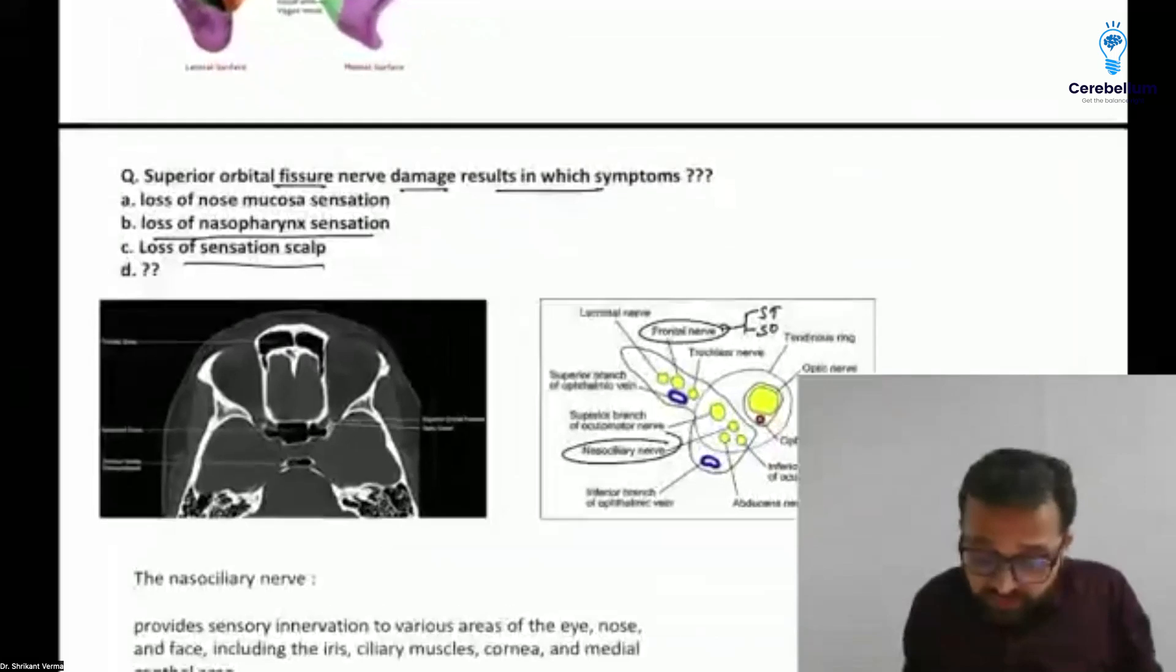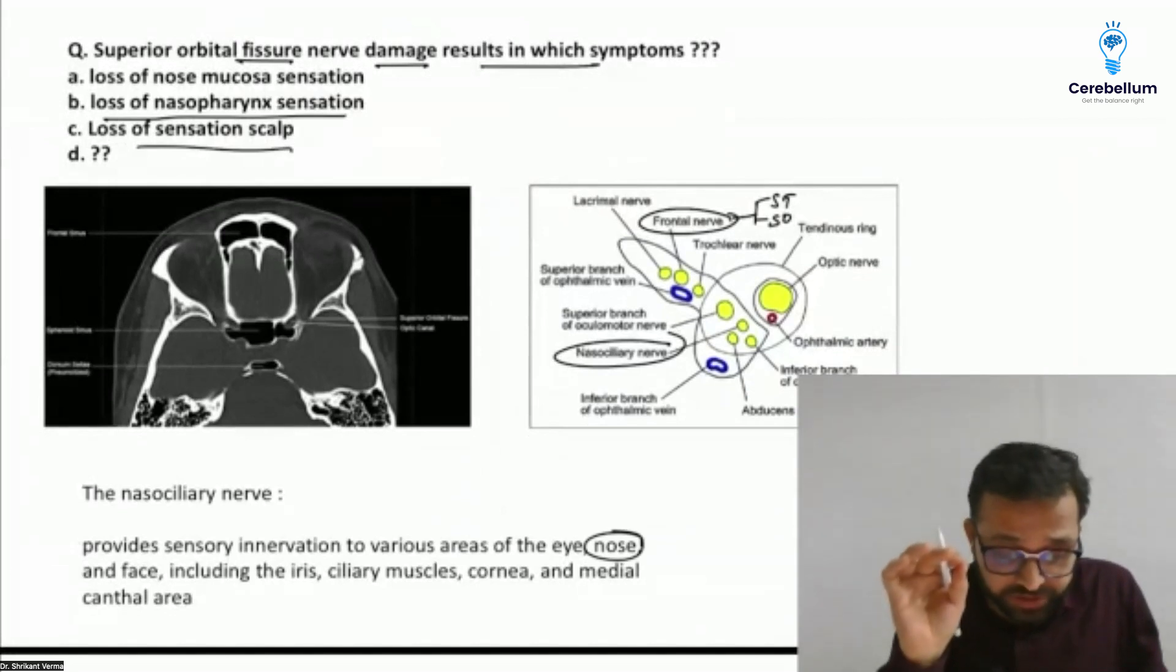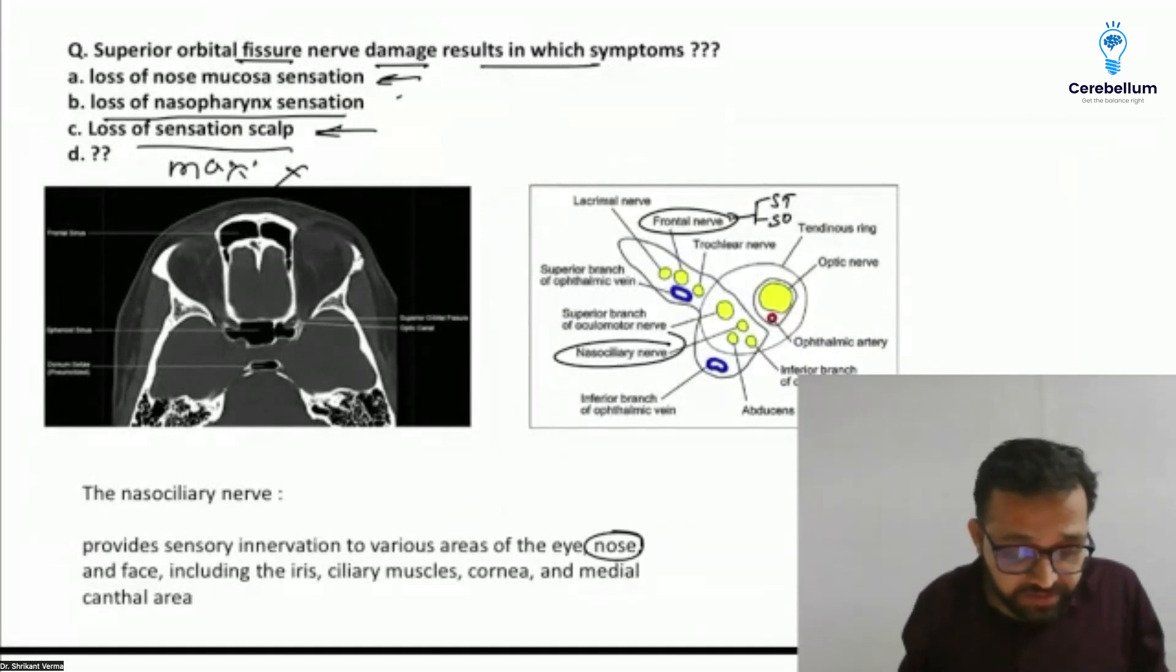Nasociliary nerve is supplying our eye, nose, face - all of these. This is a confusing question, please inform me what was the exact option. Some students are saying about the maxillary also, so you can put the maxillary, but it will not be the answer. Answer may be the nose mucosa as well as loss of sensation from the scalp, but I need the exact option. Maxillary will not be the answer, scalp may be the answer.